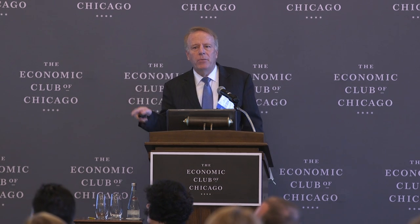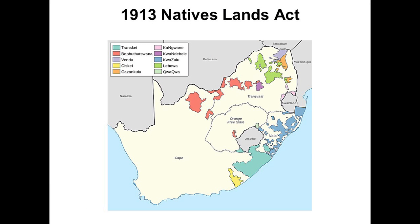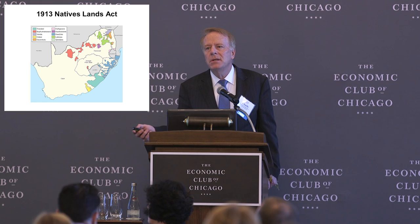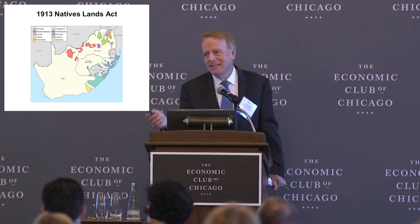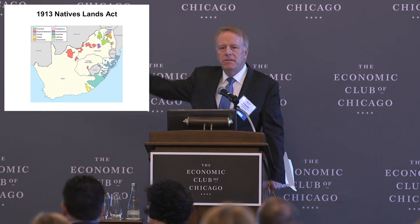In 1913, right after the formation of the country, you get the Natives' Land Act. You can think of this as similar to America setting up reservations for Native Americans. They said we're going to set aside 13% of the country, and black people are allowed to own land on that 13%. Individual tribes had their own individual reservations — and surprise, surprise, this turned out to be lousy land, almost unfarmable. Many people were pushed out of their homes and forced into the ghettos of Johannesburg. Black people were not allowed to live in the white space, though they could work there.